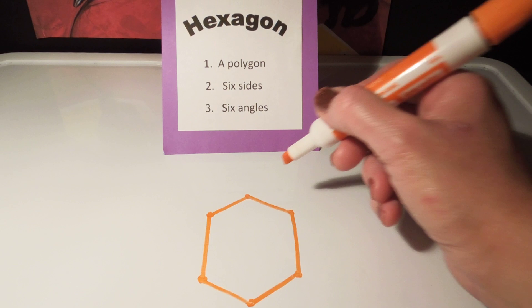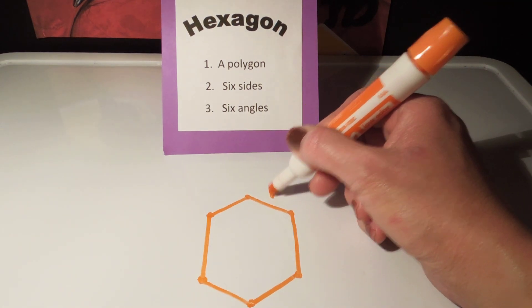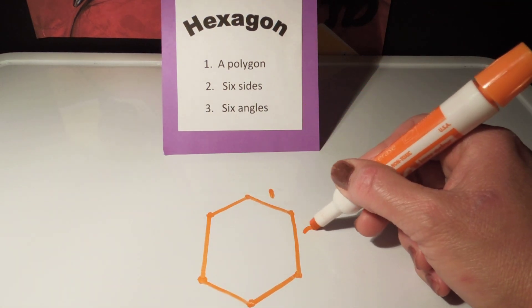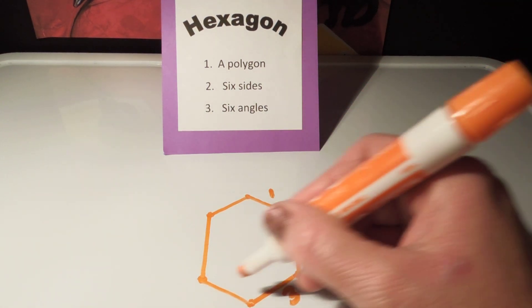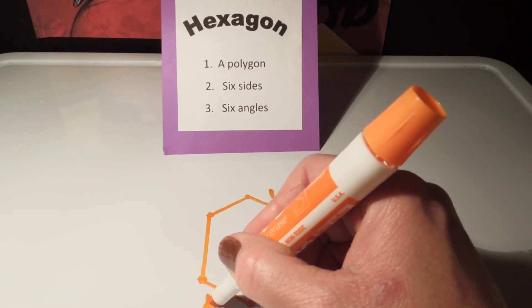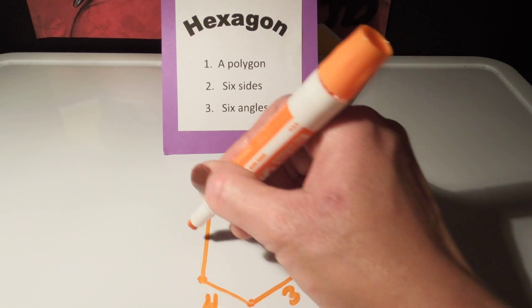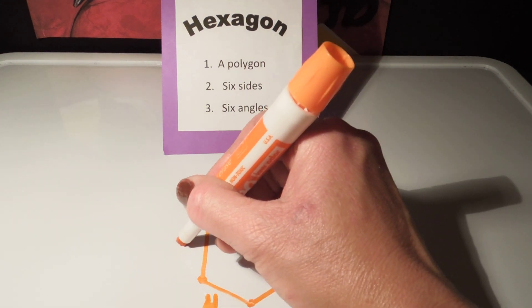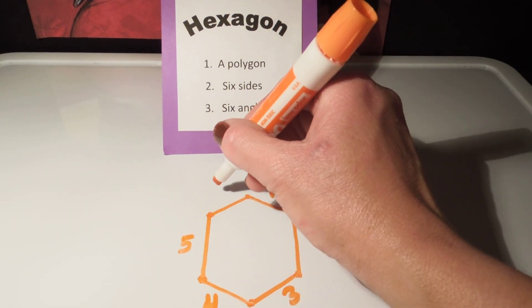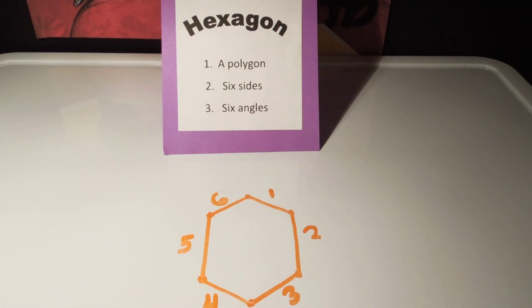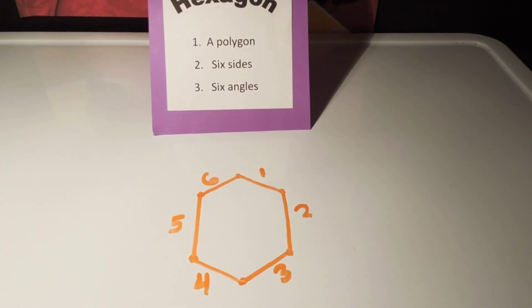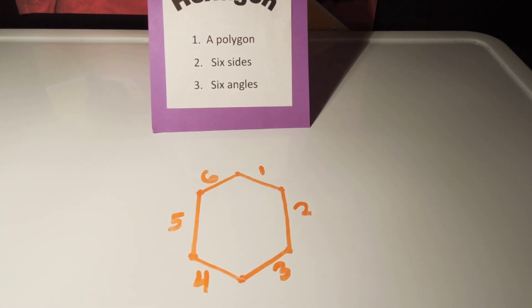Now I'm going to label the sides — I have 6 sides. And there you have it: a hexagon. Thank you.